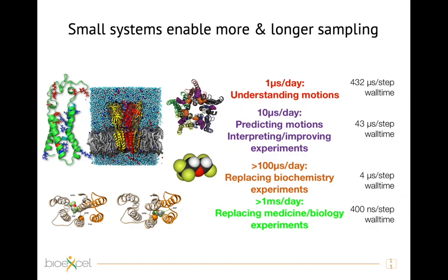One example is diffusion properties. If we want to understand the motion of a small molecule, we might need about one microsecond. But if we want not only to understand but to predict the full motion, we might need longer times. If we eventually want to replace medicine and biology experiments, we may need up to one million seconds per day — since some conformational rearrangements in cells happen on timescales from milliseconds to seconds. This means that before starting a project, you need to assess your computational infrastructure and what simulation time it allows per day, to judge whether you can calculate the property of interest.